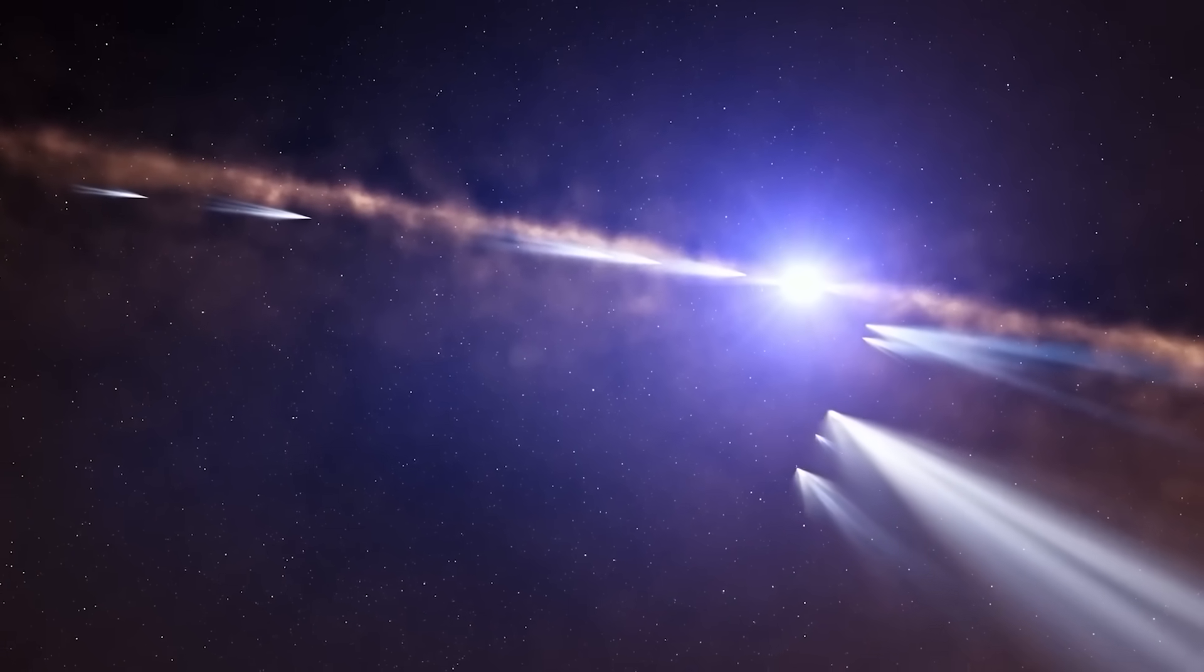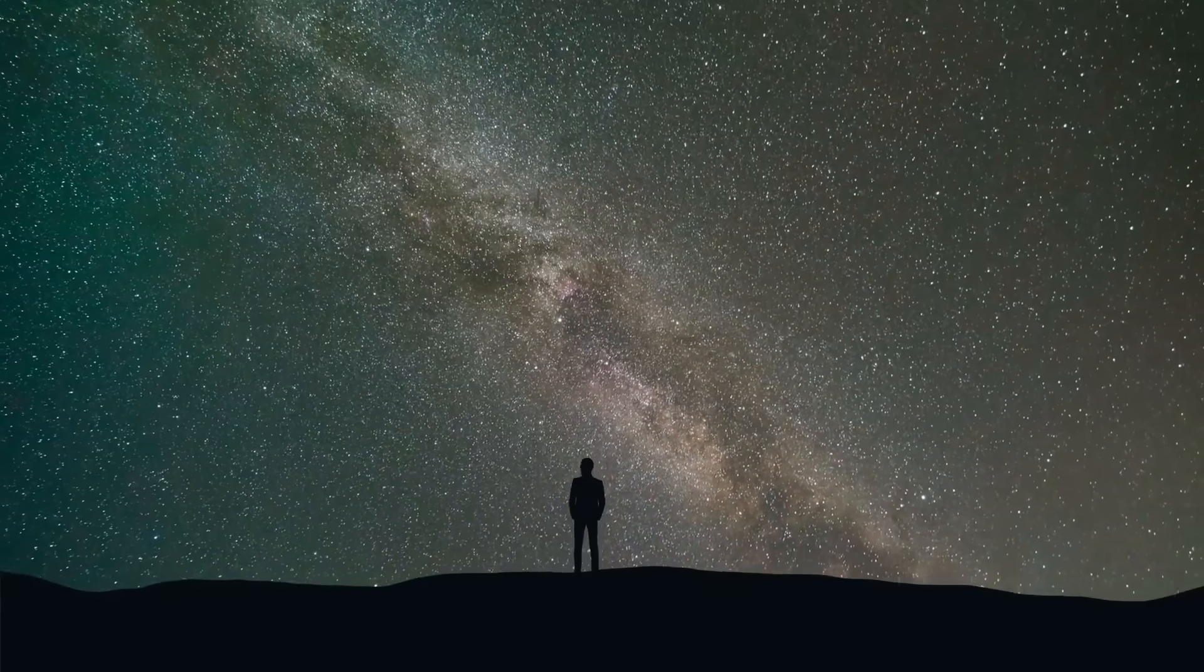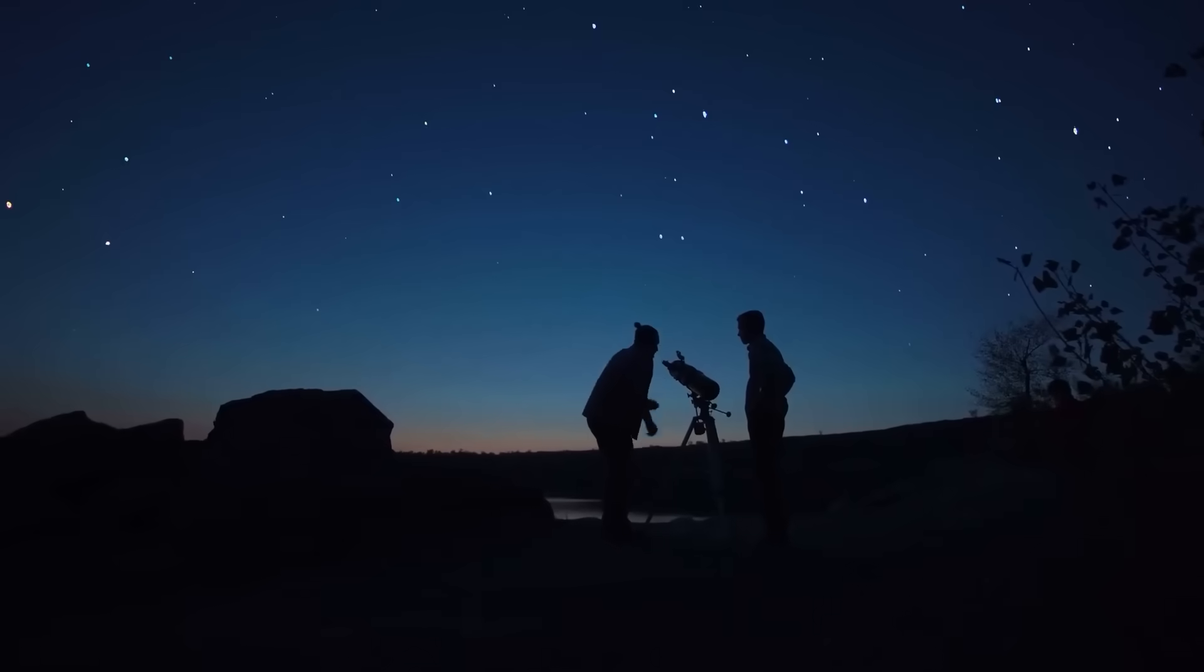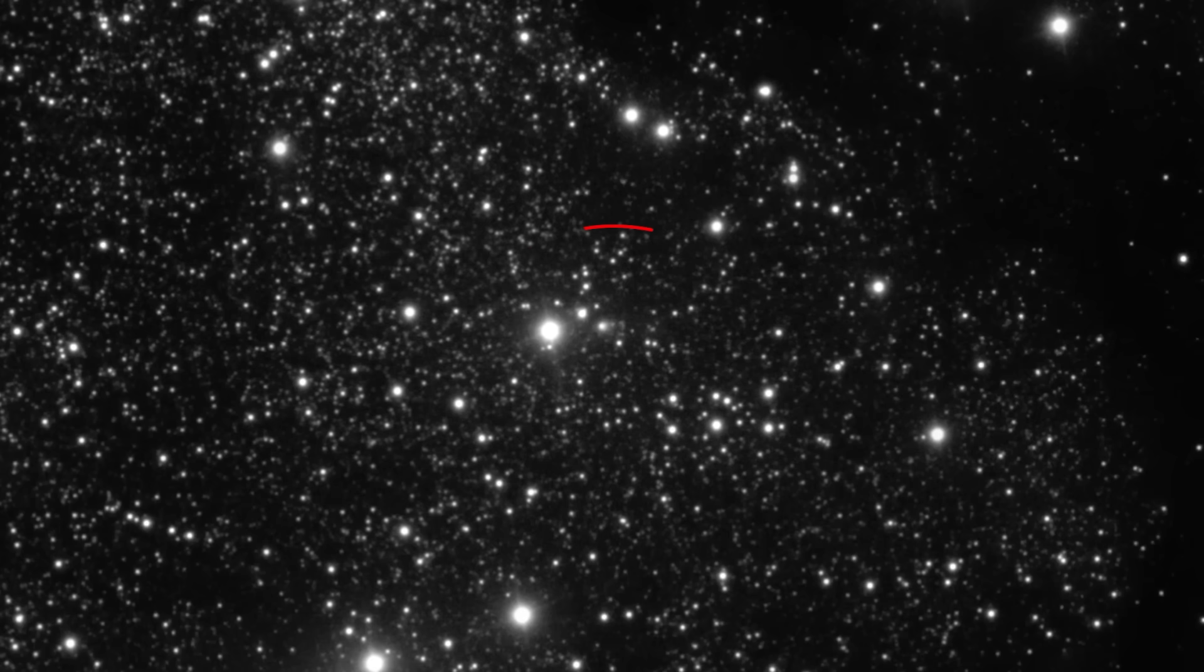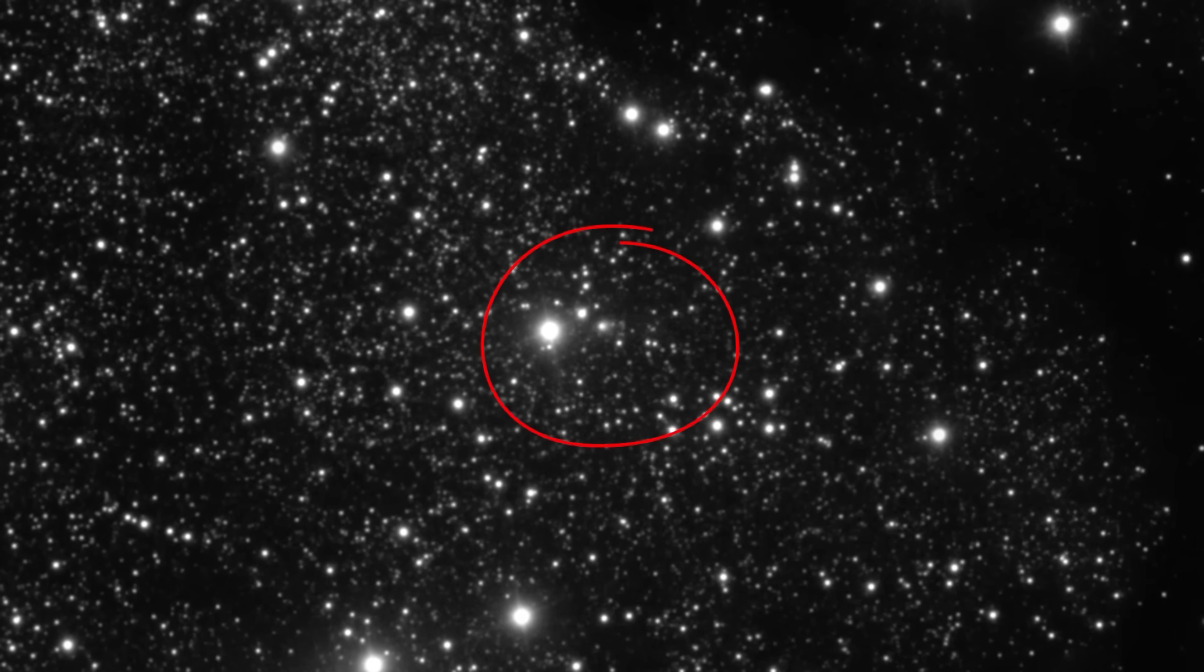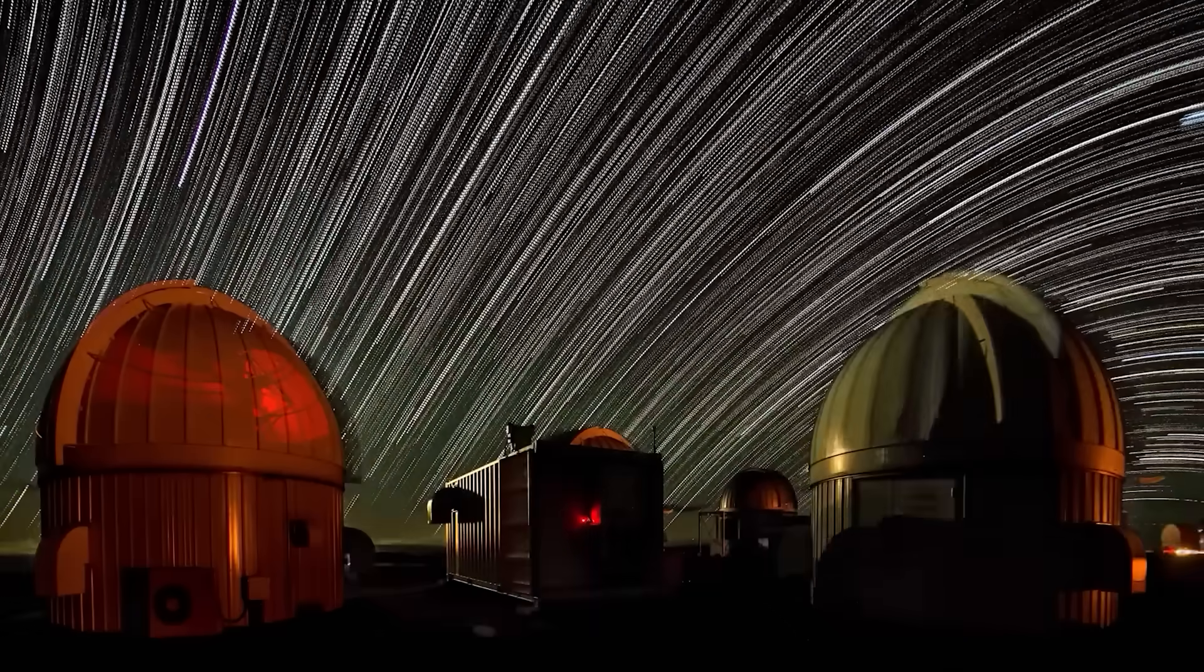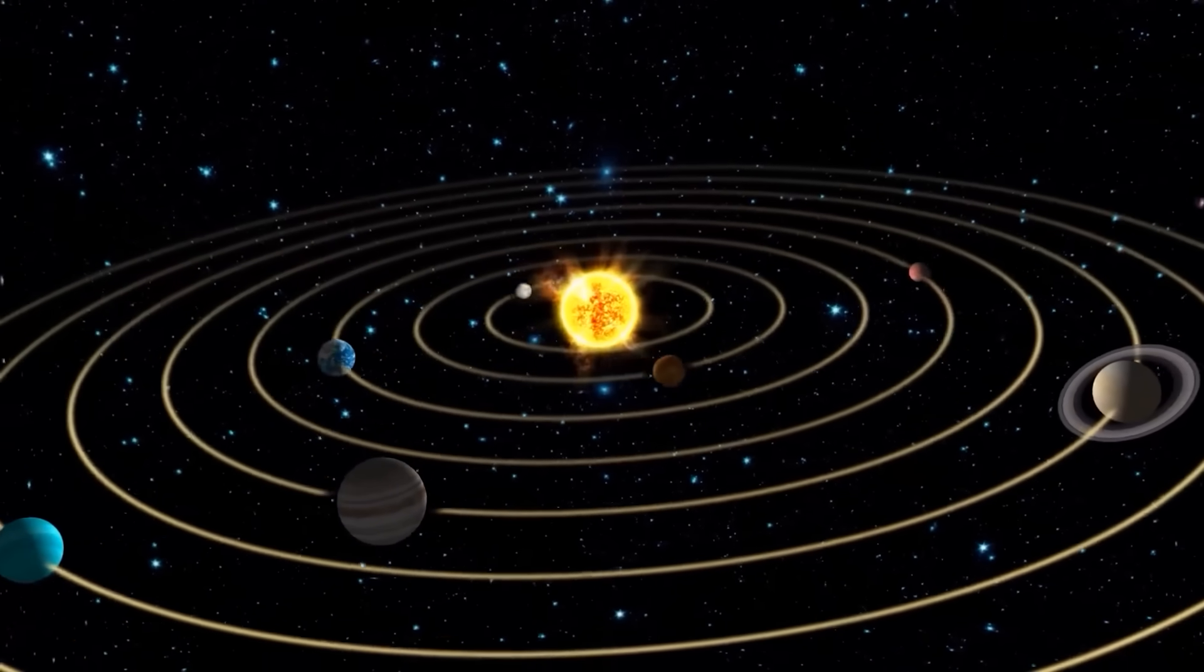Interstellar objects should be rare. If the galaxy were filled with massive wandering boulders like this, we should be seeing them regularly. The fact that we've only detected 3 in modern astronomical history suggests they're uncommon. For 3i Atlas to be both inactive and this large would require the galaxy to contain an impossibly high number of similar objects, so many that it would fundamentally contradict our understanding of planetary system formation.